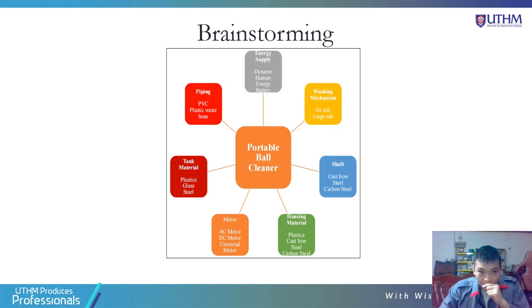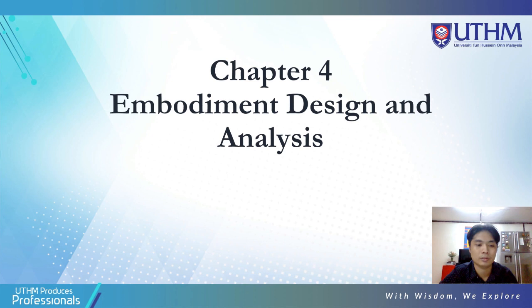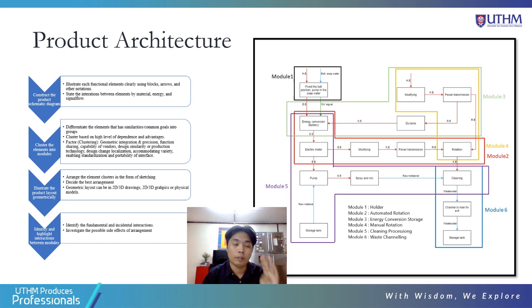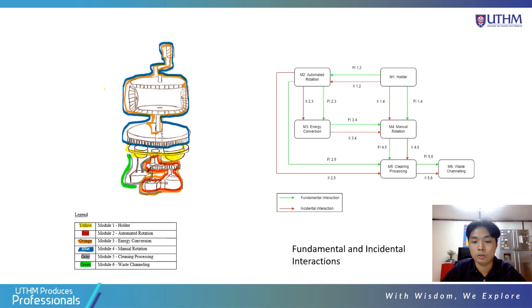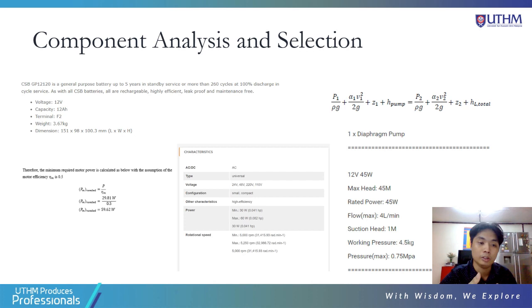I shall be talking about the embodiment design and analysis. For product architecture, this is a very important step as it helps us with the design. There are four stages: construct the product schematic diagram, cluster elements into modules, illustrate the product layout geometrically, and identify and highlight the interactions between modules. As you can see on the right, we have already constructed the schematic diagram and clustered elements into modules. On the left is the geometric layout. When choosing a component, it is very important to identify the parameters — for example, the battery must be able to power the motor and the pump, and the pump must be able to pump the solution to a certain head.